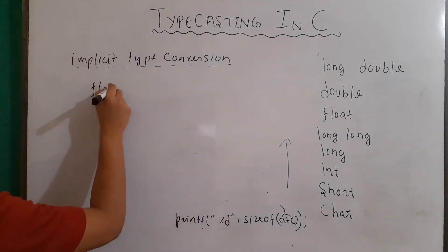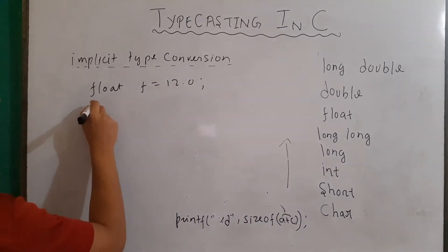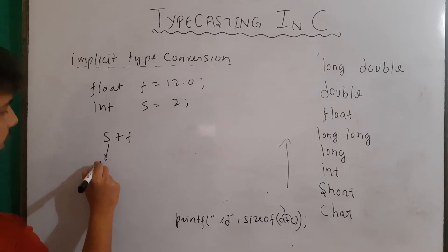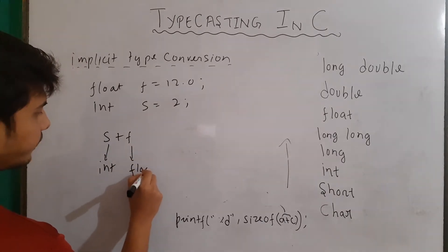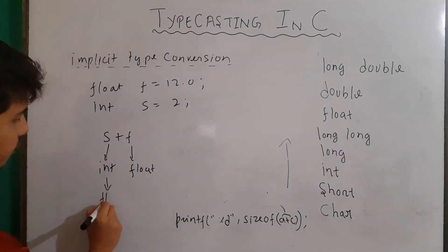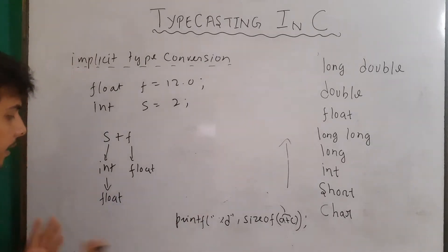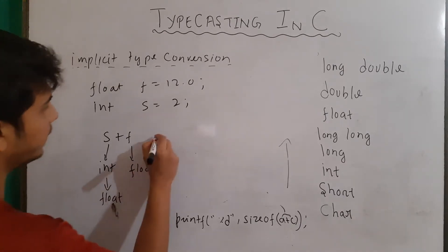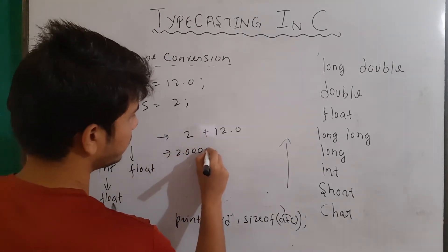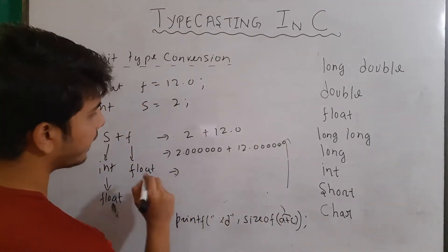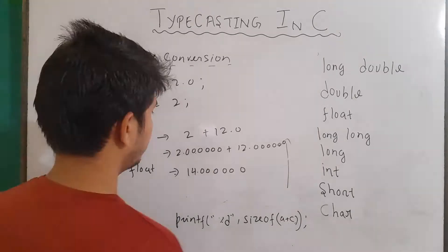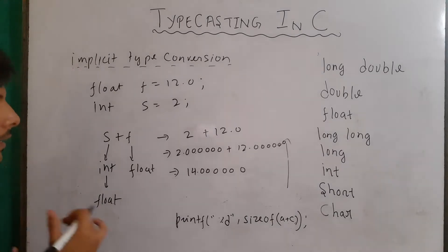Let's see another example. We have float f = 12.0 and integer s = 2, and I perform s + f. Since s is integer and f is float, integer is lower in the hierarchy, so it will be promoted to float. This is done implicitly by the compiler. So s becomes 2.0000, and the final output is 14.0000 — integer type is converted to float type implicitly.